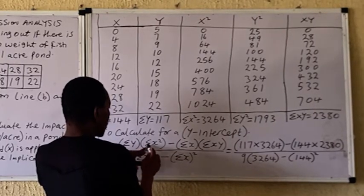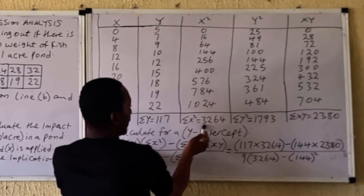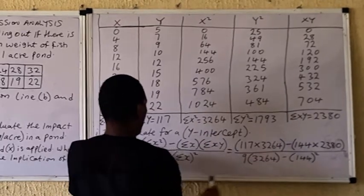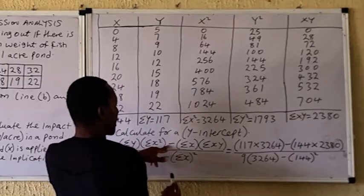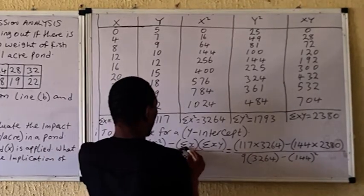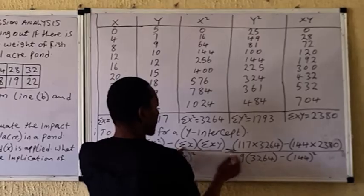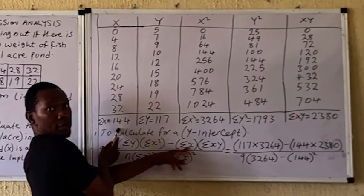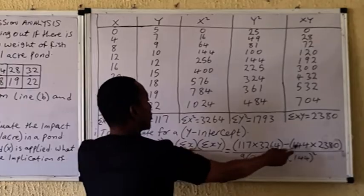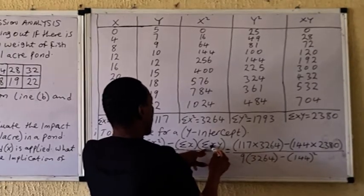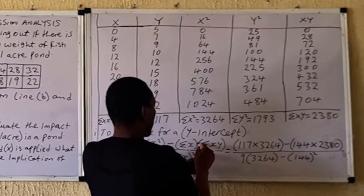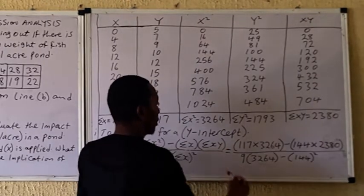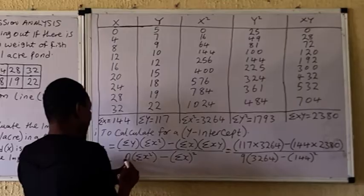Now let's apply this. The summation of y, which is 117, goes here. Times summation of x-squared — copy that value and put it in brackets here, with a minus sign. Then summation of x goes there, and summation of xy — put your multiplication sign and place summation xy there.